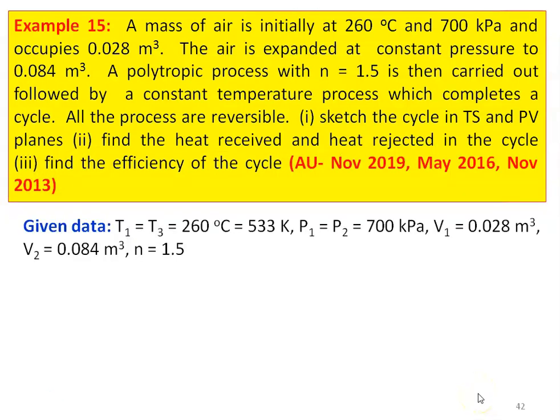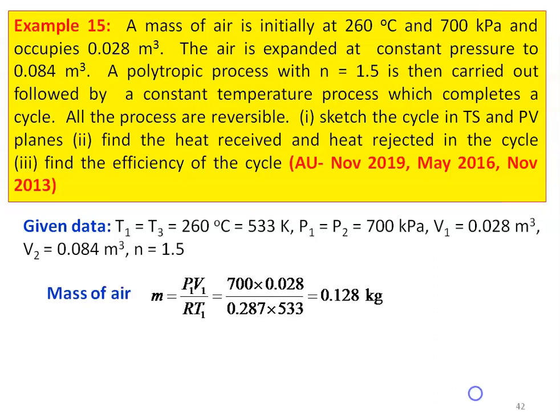Given data: T1 equal to T3 equal to 260 degree Celsius equal to 533 Kelvin; P1 equal to P2 equal to 700 kilo Pascal; V1 equal to 0.028 meter cube; V2 equal to 0.084 meter cube; n equal to 1.5. The mass of air from the perfect gas equation: m equal to P1 V1 divided by R into T1, which is 700 into 0.028 divided by 0.287 into 533, equal to 0.128 kilogram.